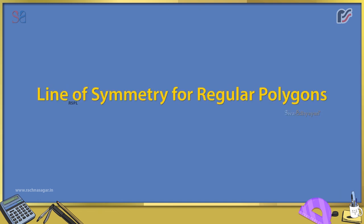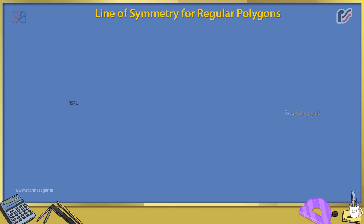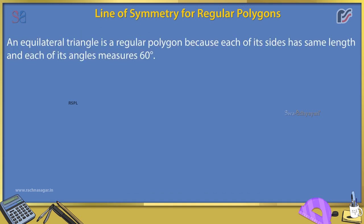Line of symmetry for regular polygons. An equilateral triangle is a regular polygon because each of its sides has the same length and each of its angles measures 60 degrees. We have three lines of symmetry for an equilateral triangle.